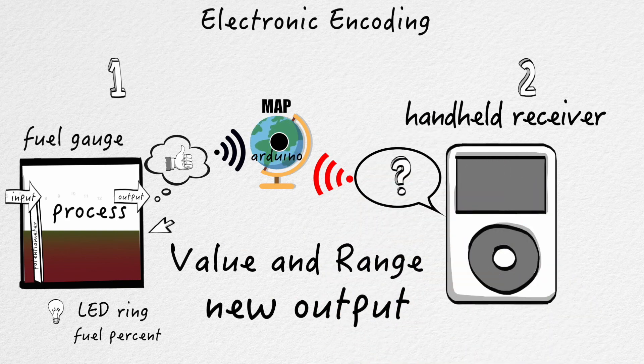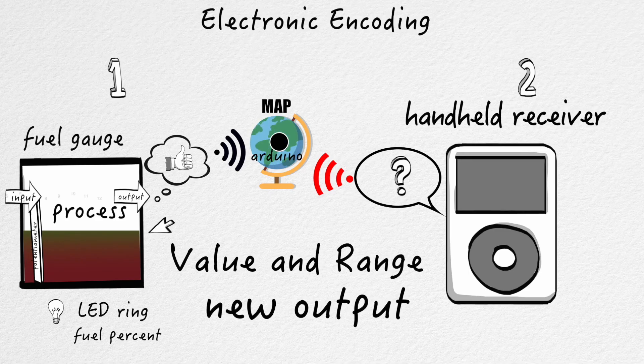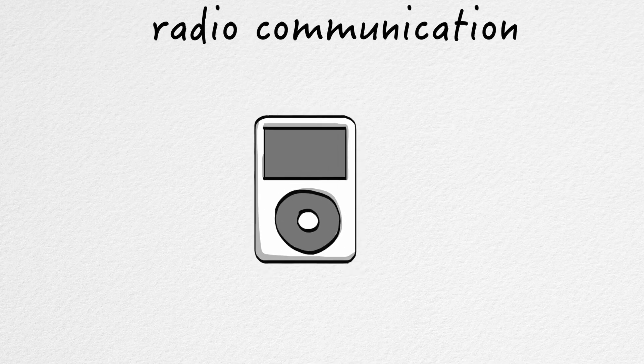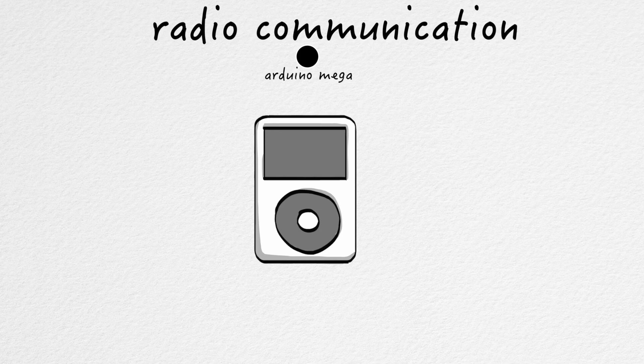So that's how we get our outputs and our end gauge values on the fuel gauge. Now, this part's a little trickier. We have to start talking about radio communication now. For the handheld receiver, all of these things had an Arduino mega as the brains of it.